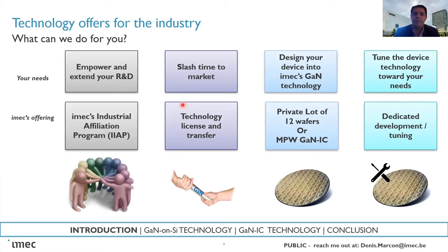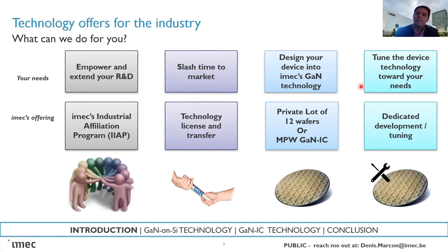For companies that are behind in GaN technology — for instance, with an 8-inch line they want to utilize for producing GaN — we offer a technology license and transfer to slash time to market. Basically, we can transfer our e-mode device technology to any 8-inch line in the world. Often the two offerings are bundled together, because once you install the GaN technology you also want to stay up to date with new technology from iMac. For the fabless and fab-lite community, we offer the possibility to design your own GaN device using the iMac PDK via a private lot, or to design GaN ICs using our technology with a very cost-effective multi-project wafer offering.